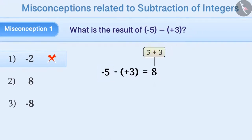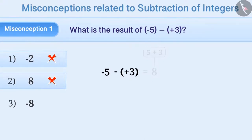Sometimes 5 and 3 are added, but the negative sign is ignored. Because of this, option 2 may be chosen, which is also incorrect. The correct answer is option 3, that is minus 8.